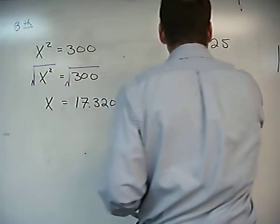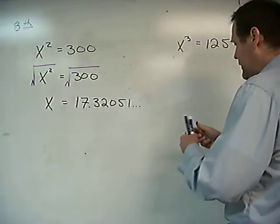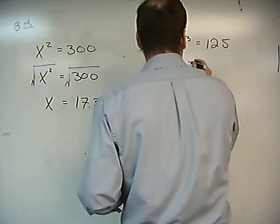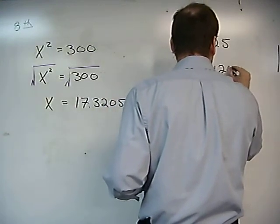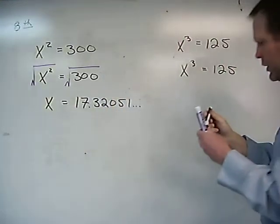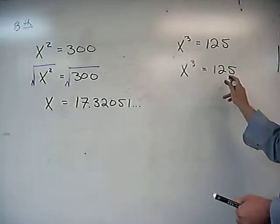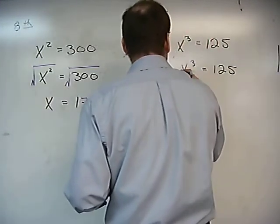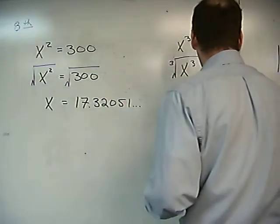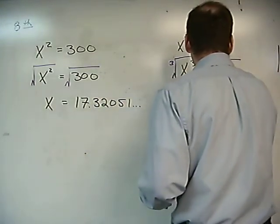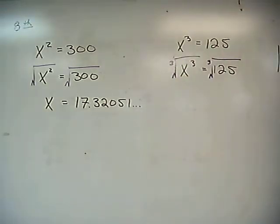Over here, I am going to do almost the exact same thing. x cubed equals 125. If I want to get rid of a cubed over here, I have to do the same thing to the left side as to the right side. I am going to take a cube root on this side. On this side, I am going to do the same thing. I am going to take a cube root on this side.